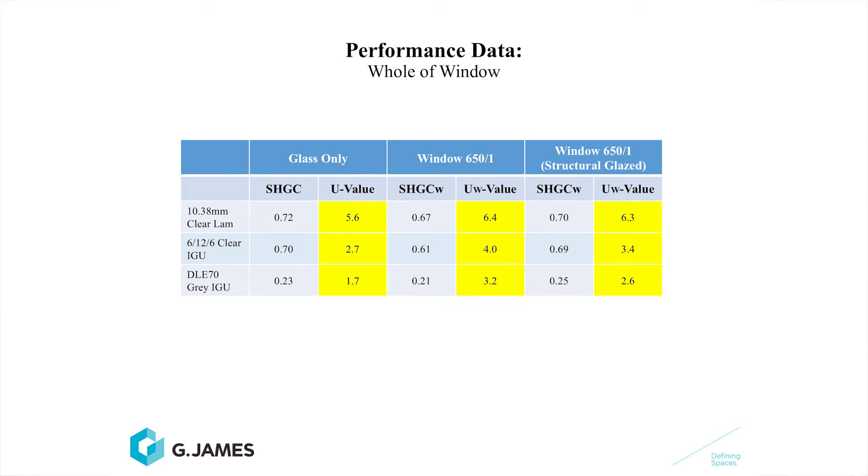If you look at the solar heat gain of the glass, once you put it into a frame it reduces, because the sun's rays don't come through a proportion of the frame. Conversely, your aluminium frame performs poorly with relation to U-value — it is a good conductor and allows heat to escape from the building, so U-values are higher than the glass. Aluminium is a good conductor, unlike glass, which is a poor conductor. But in a window, the glass is the best-performing element.